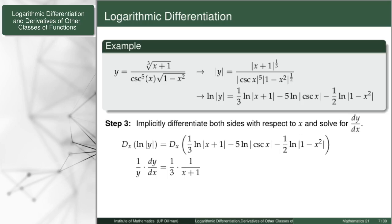For the second term, by the constant multiple rule, 5 will go out. The derivative of ln |csc x| will be 1/csc x. But unlike the first term, the derivative of csc x is not 1 — it is negative csc x cot x — and thus I will write it by chain rule. Last but not least, I will have one-half times the derivative of ln |1 minus x²|, that's 1/(1 minus x²), and by chain rule, the derivative of (1 minus x²) is negative 2x.